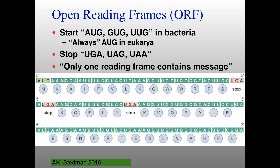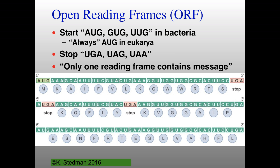When you're looking at DNA, you have the potential for six open reading frames — three on each strand. Unless you know which strand is being transcribed, it's possible that you could have open reading frames in either one of them.